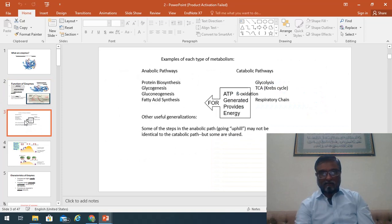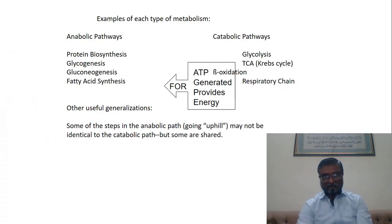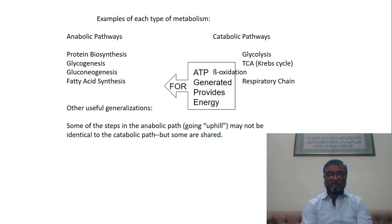There are several metabolic processes happening in our bodies — anabolic pathways and catabolic pathways. Examples of anabolic pathways include protein biosynthesis, glycogenesis, gluconeogenesis, and fatty acid synthesis. Among the catabolic processes normally associated with the release of energy are glycolysis, the TCA or Krebs cycle, respiratory chain, and beta oxidation in the case of fatty acid catabolism.